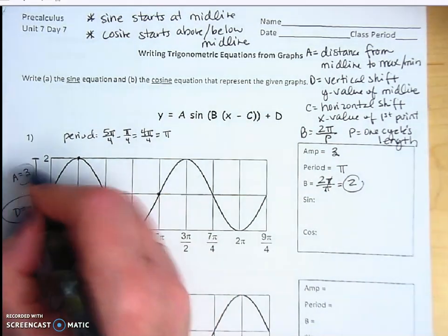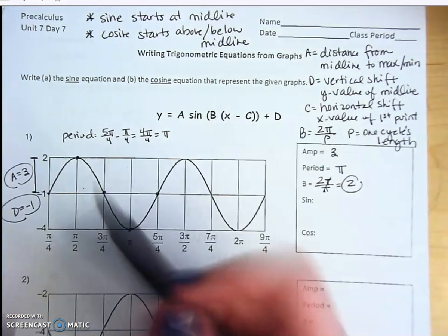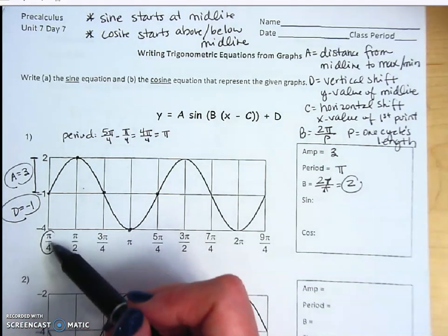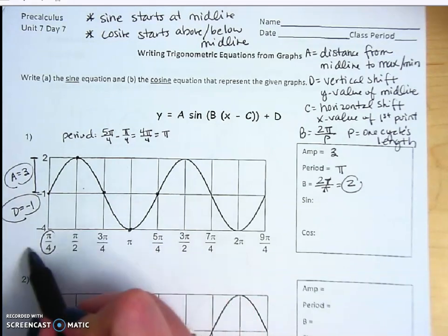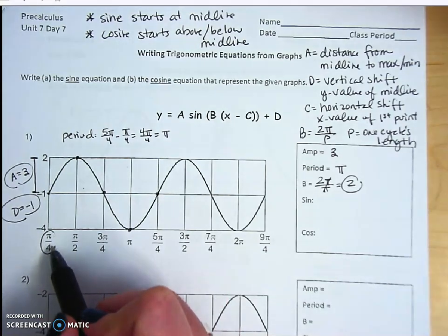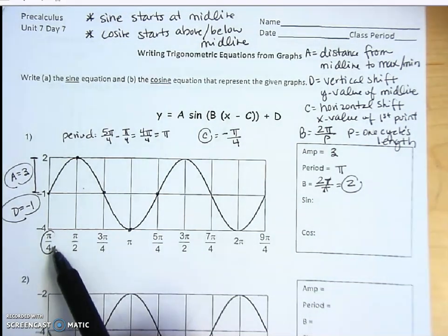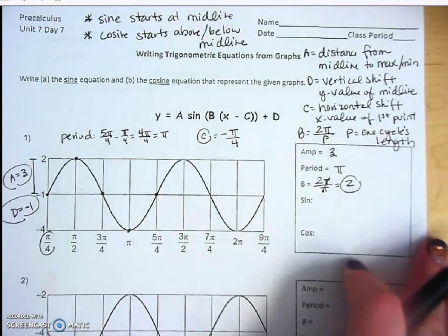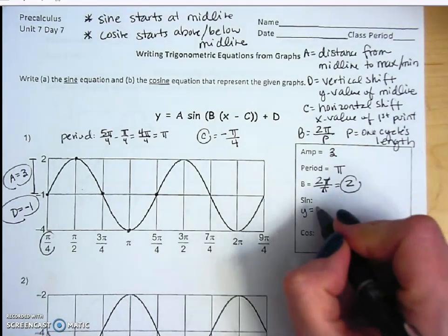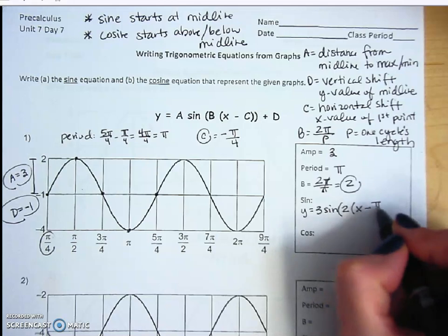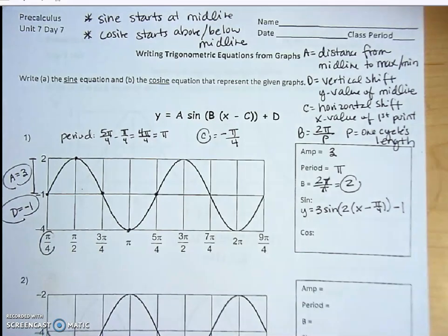Now I have my a, b, and d values. The c value comes from pi over 4 — since the very first point is at positive pi over 4 instead of 0, the graph has shifted to the right, which means c is negative pi over 4. With all values determined, I can write the sine equation: y equals 3 sine of 2 times (x minus π/4) minus 1.